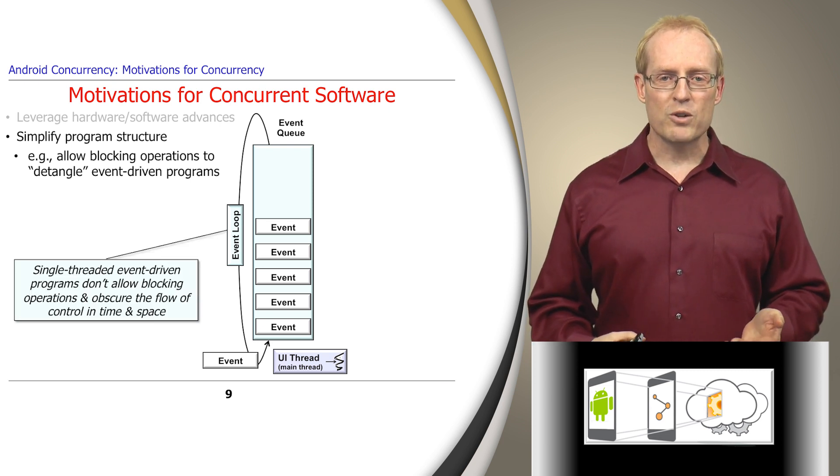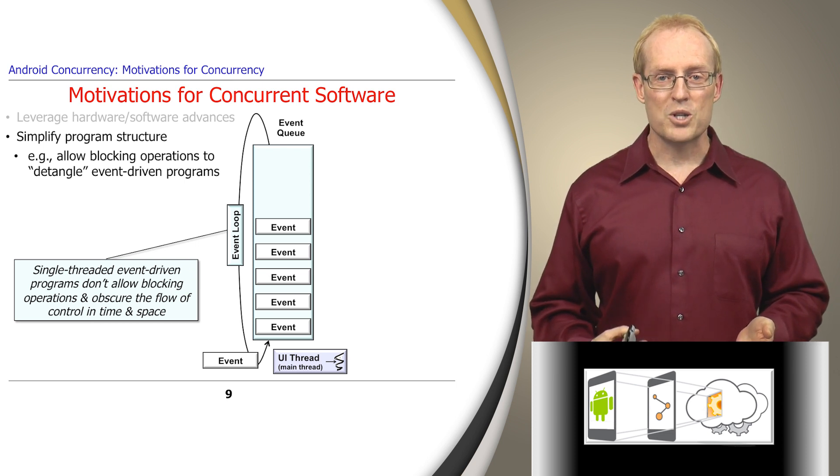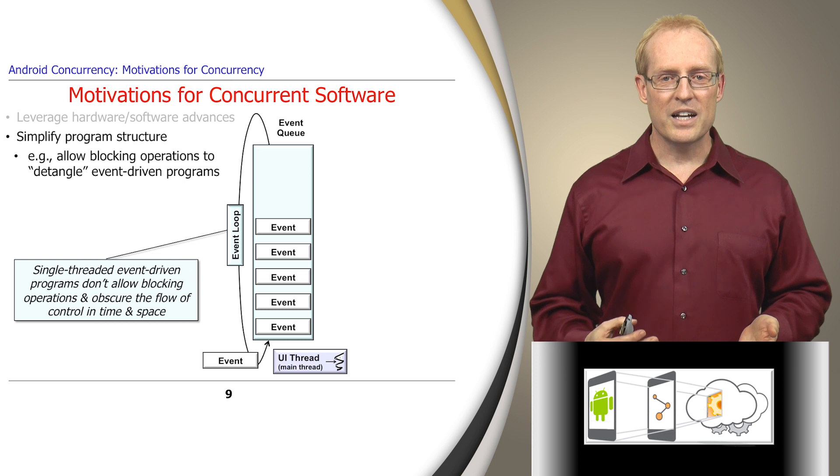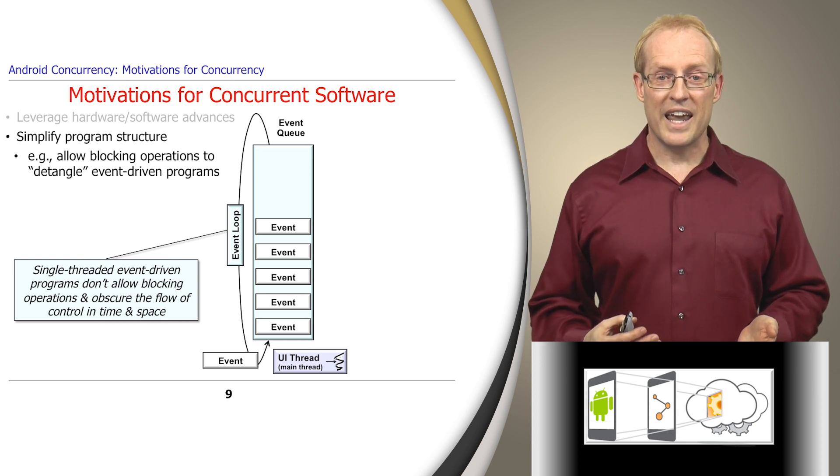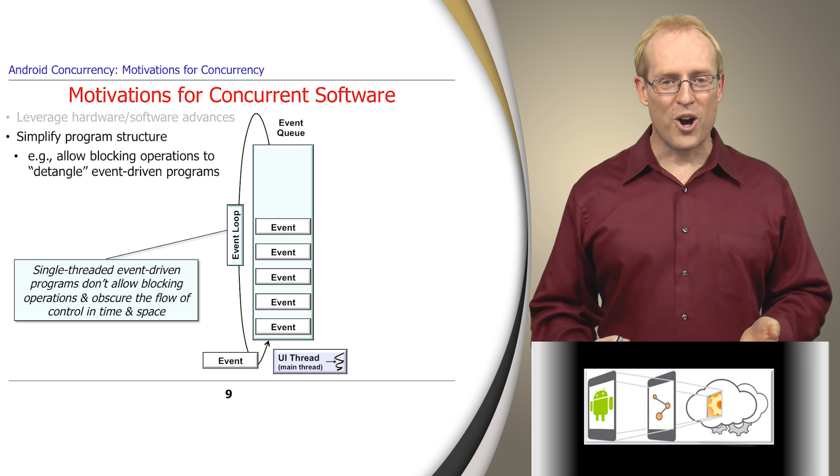Programming a purely event-driven software model is hard, however, since the structure of its control flow is obscured in both time and space. In particular, any time a program might block, such as when it performed a read operation on a network connection, it had to post an event on a message queue and handle the operation later in its event loop, which was awkward to program and hard to optimize.